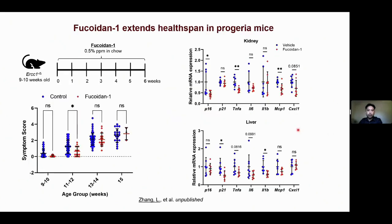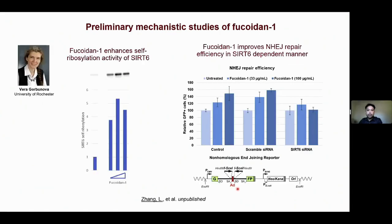We also performed chronic treatment — after six weeks of treatment in RCC1-minus Bergera mice, fucoidin one can suppress overall aging symptoms and extend health span, especially after two weeks of treatment. It also reduced tissue senescence including in kidney, liver, and other tissues.